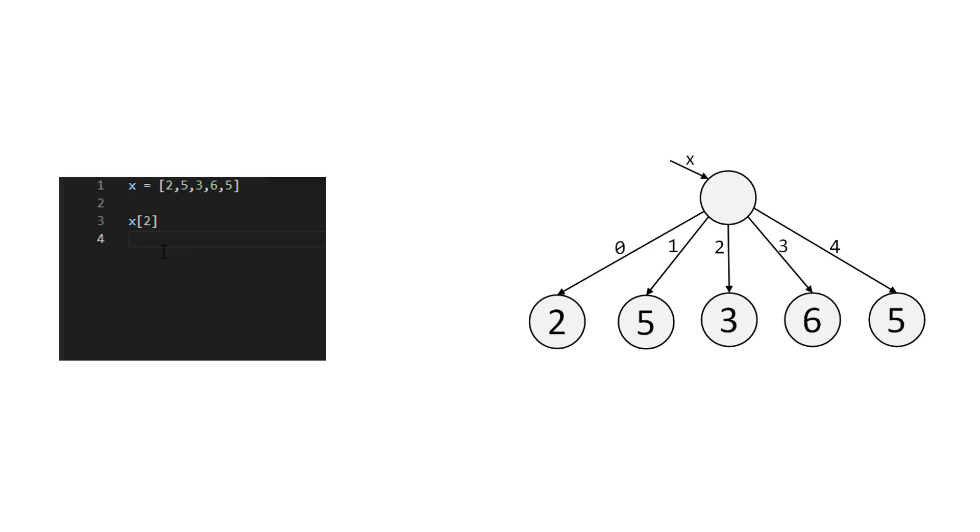So that's how reading works, but what about writing? The only thing you have to know about writing is that whenever the computer sees an equals sign, it takes whatever is on the left and points it to whatever is on the right.